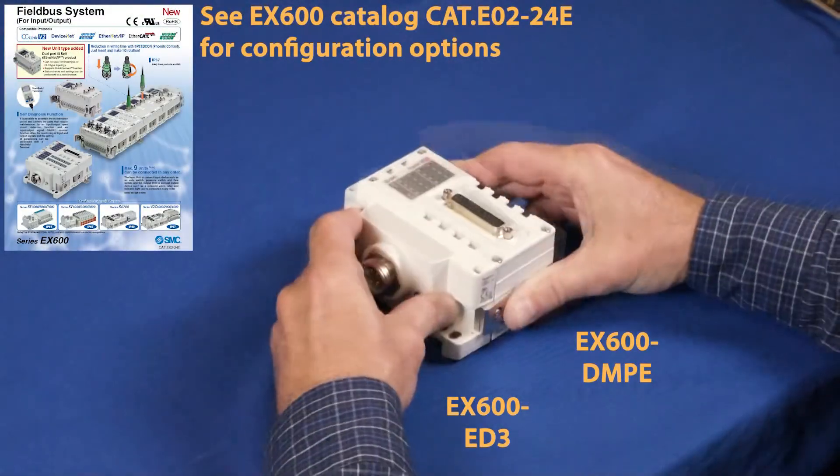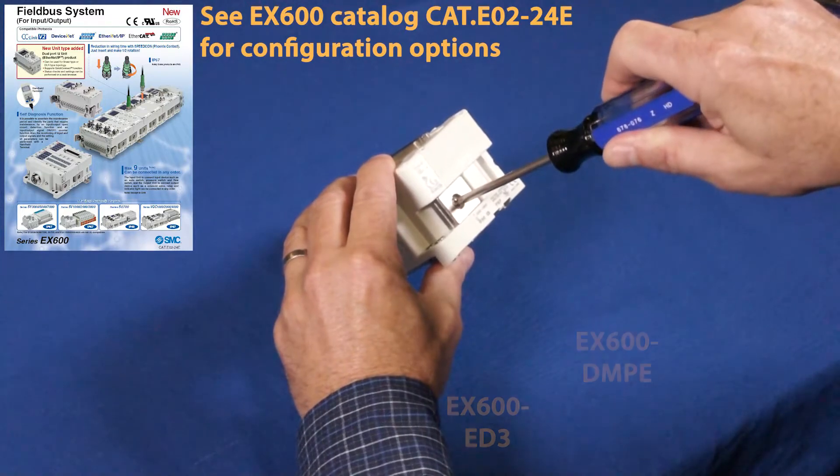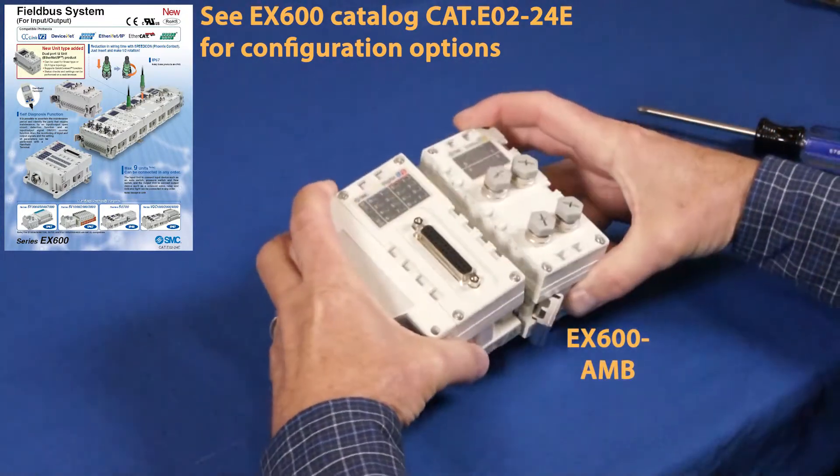First, we need to assemble the EX600 modules. Connect the IO module to the end plate. Add additional IO modules as needed.